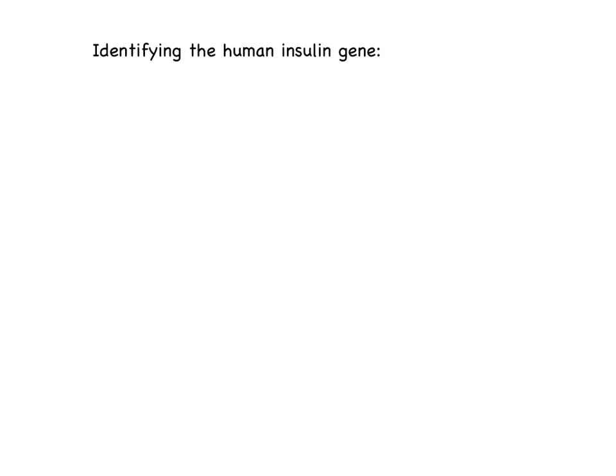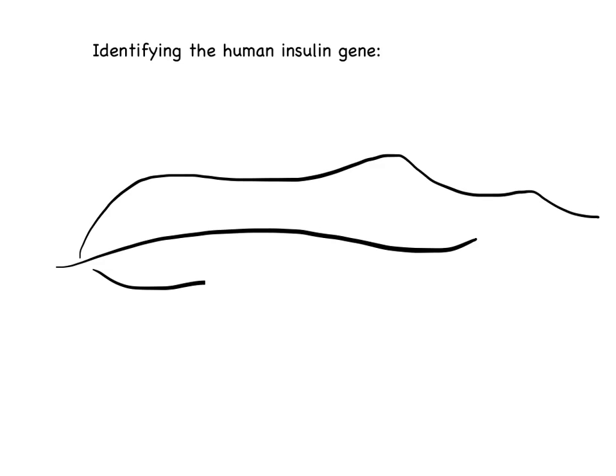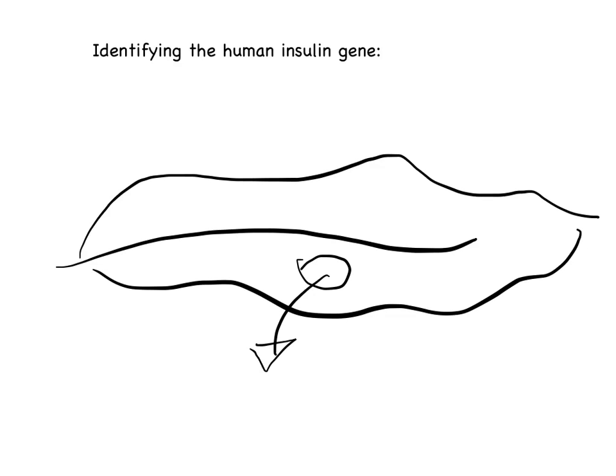Step one: identifying the human insulin gene. That's straightforward nowadays. Following the Human Genome Project, the human insulin gene sequence is fully known. But actually, the human insulin gene itself is obtained by taking a cell out of the pancreas — one cell out of the pancreas — and looking for an mRNA transcript. And that is how we isolate the human insulin gene.